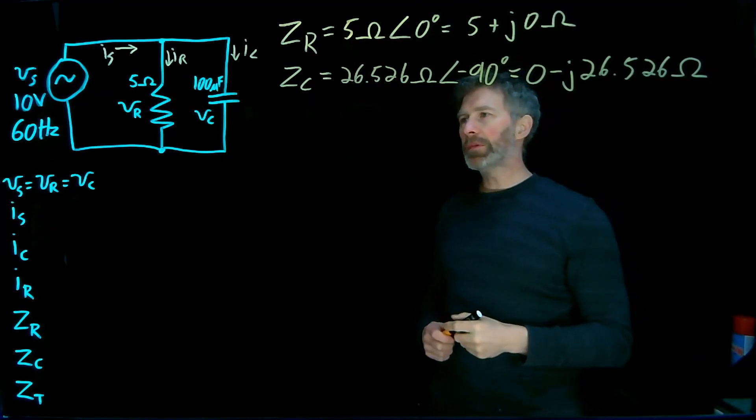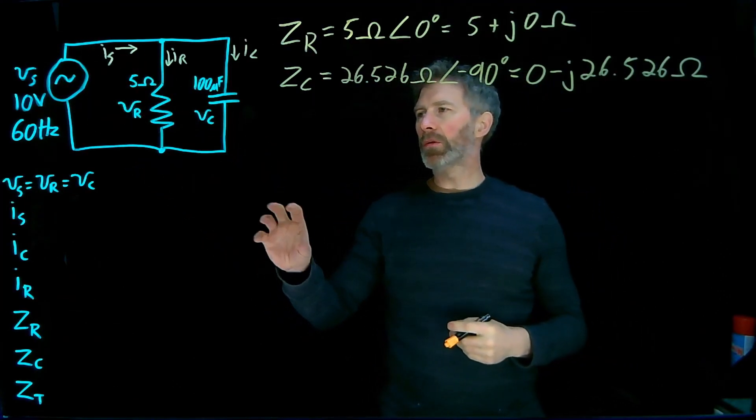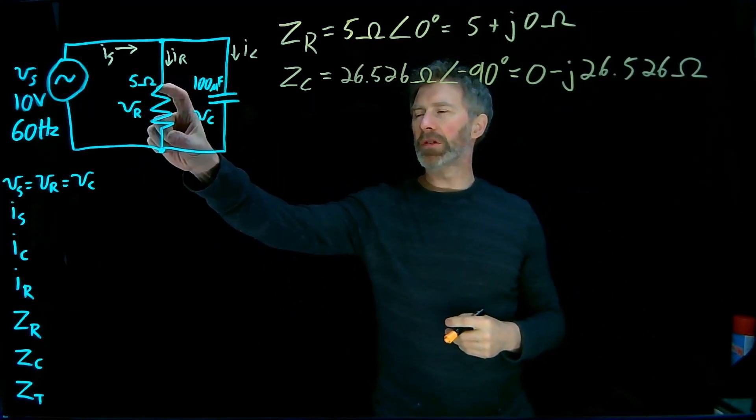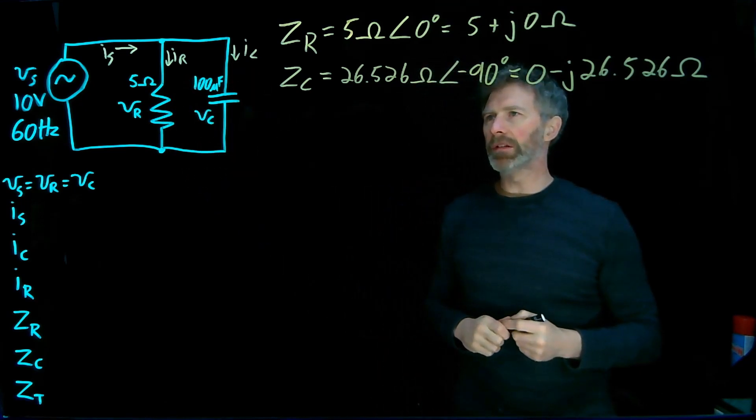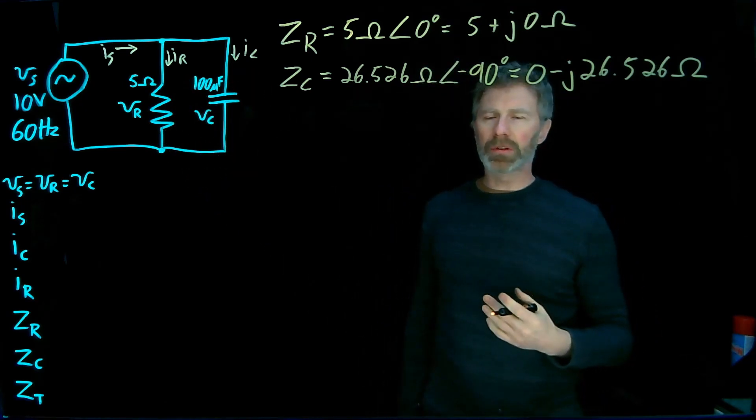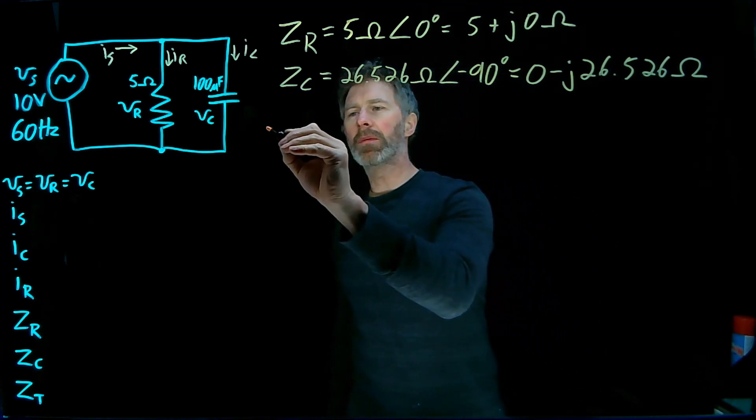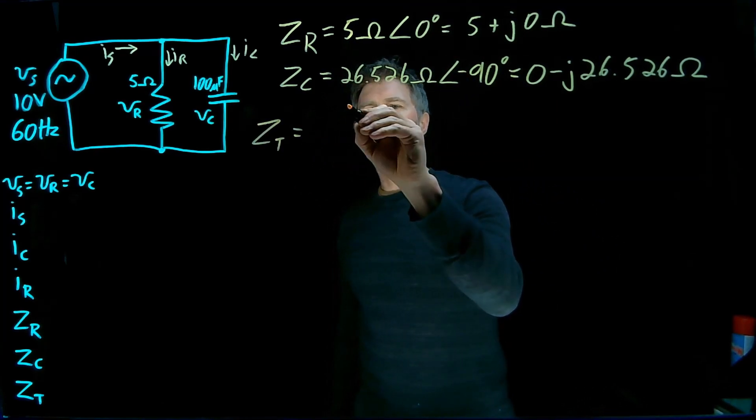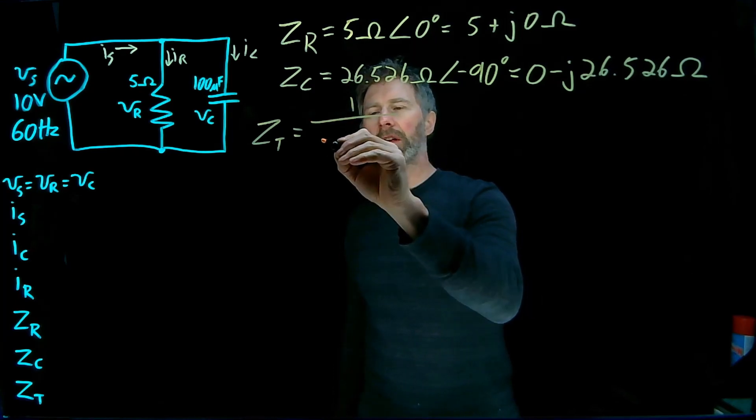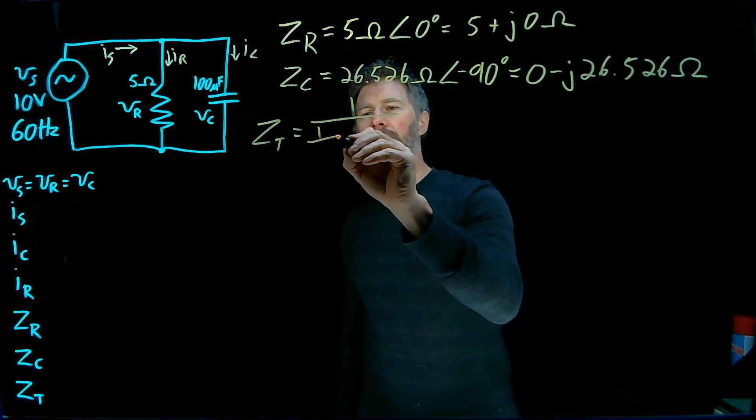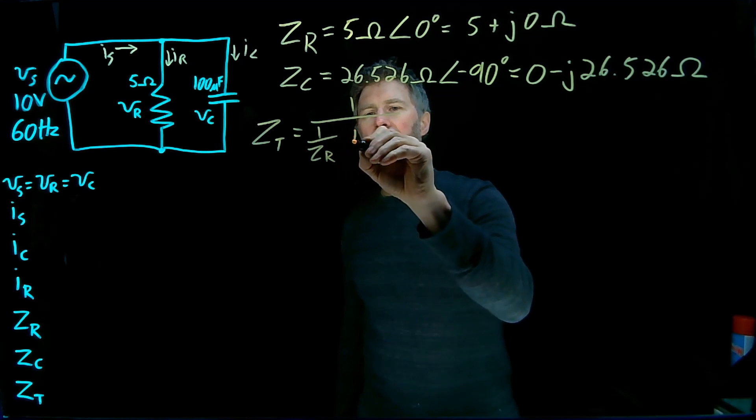The total impedance seen by this source is equal to the parallel combination of that resistor impedance and that capacitor impedance. While it's not really hard to figure out, there's a fair number of steps in the calculation. Because in parallel, that total impedance is equal to 1 over the inverses of those impedances.